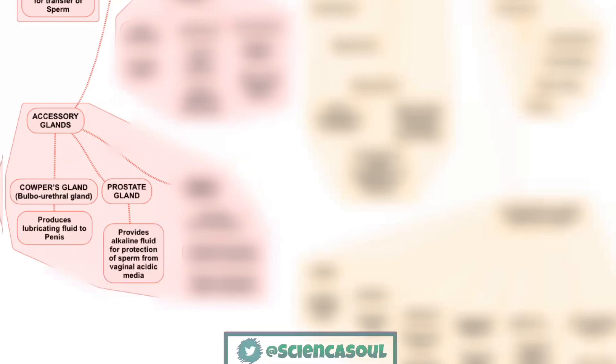The second gland is the prostate gland, which provides alkaline fluid for protection of sperm from the vaginal acidic media. These account for 30% of semen.